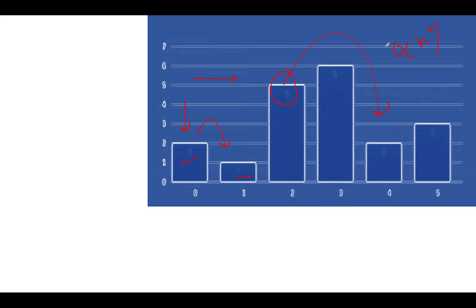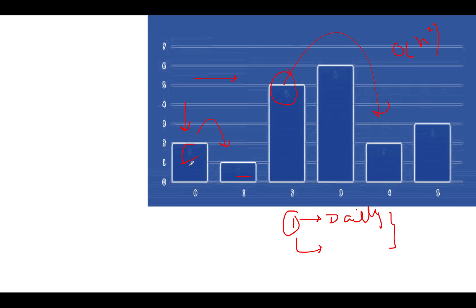The answer is yes — we will use stacks. This draws an analogy from previous problems: daily temperatures and next greater/lower element towards right, all solved using stacks. Using stacks, we can identify the next lower index for each height in O(n) time complexity. Let's get started.